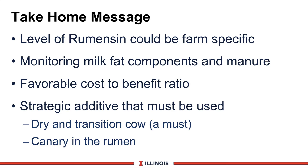As we finish this module, here are the take-home messages. Number one: the level of rumensin could be very farm-specific. Number two: monitor milk fat components and manure, as these signal how economically effective the product will be. Third: the research shows a very favorable cost-to-benefit ratio. And finally, this is a strategic additive that must be used in dry cow and transition cow programs — this is a must. It's also a useful additive because it acts as a 'canary in the rumen': if your cows send a message such as lower milk fat test, it's an indication that other problems have occurred in the ration or on the farm. Thanks, have a great day.